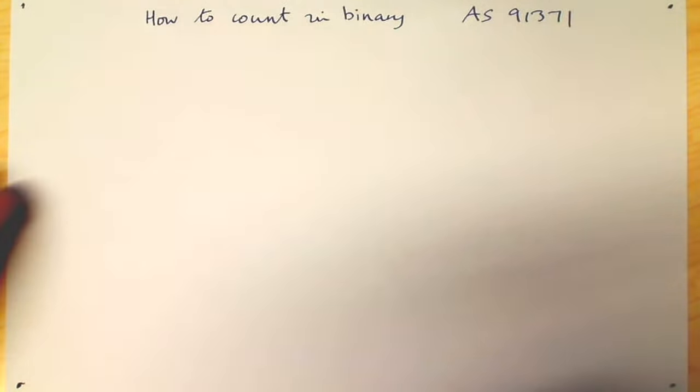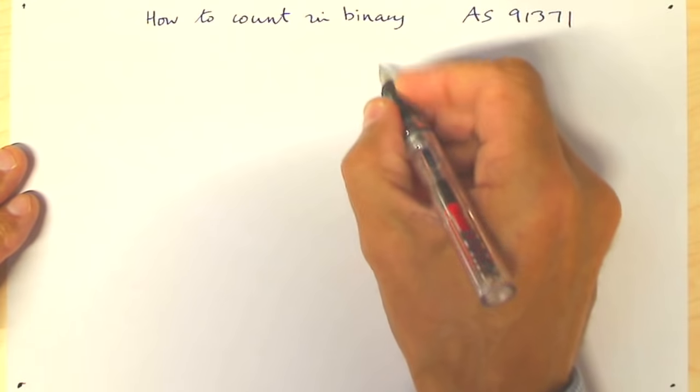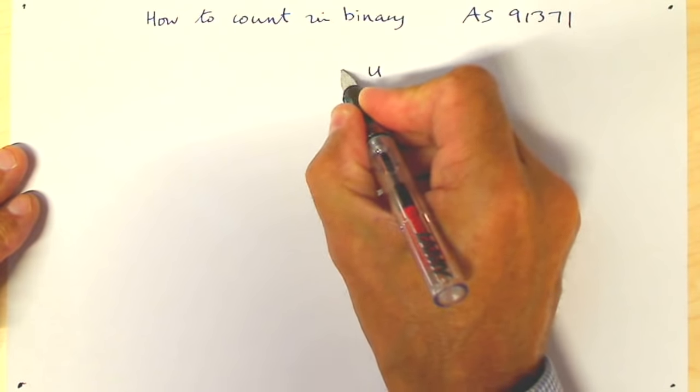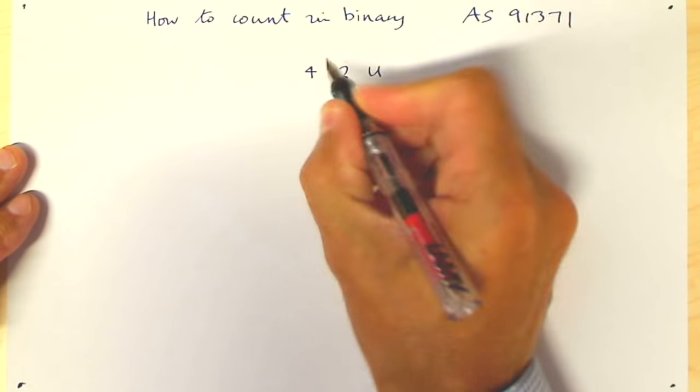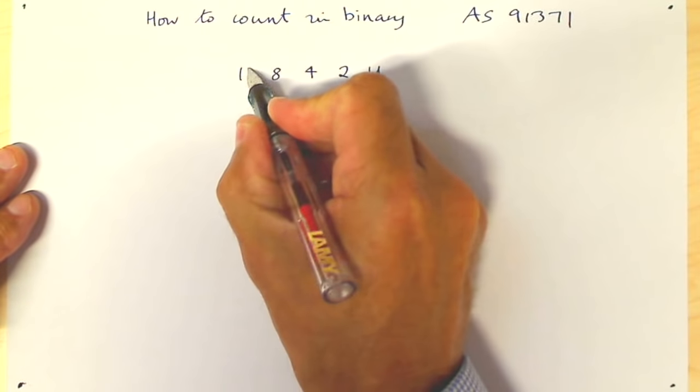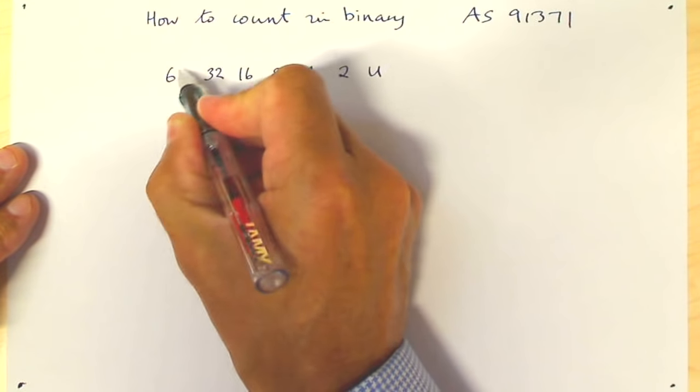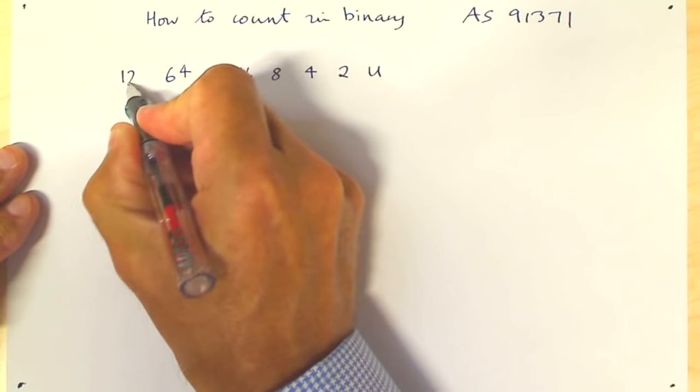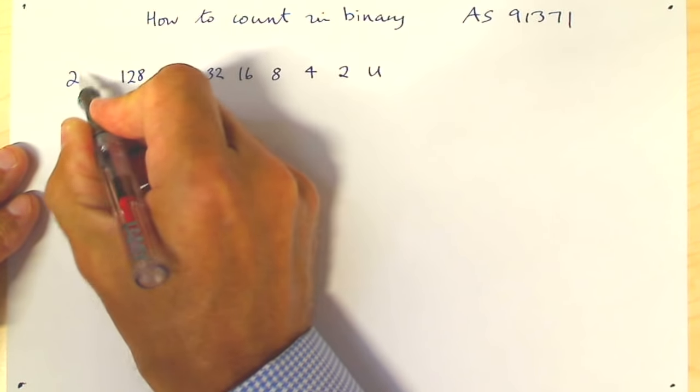So the first thing I'm going to do is write out a number line: units, 2s, 4s, 8s, 16, 32, 64, 128, 256.